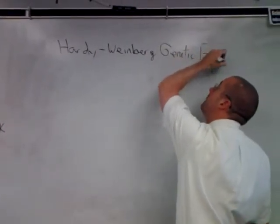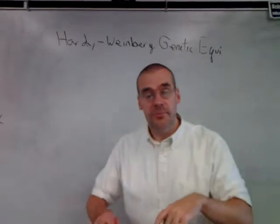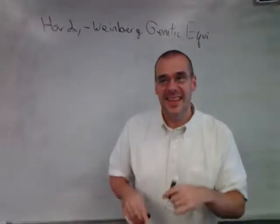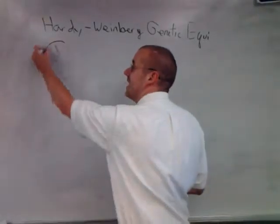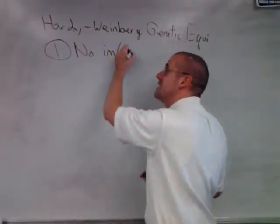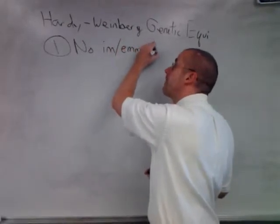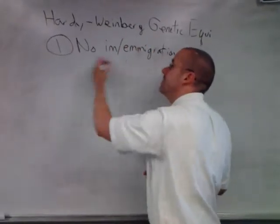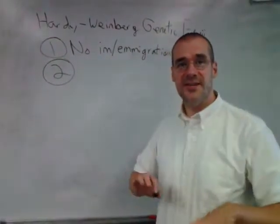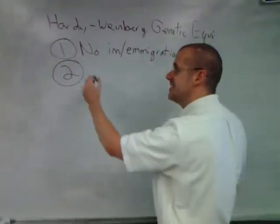They assume certain factors are true. They assume that, number one, there is no movement in or out of the population. They call it immigration and emigration. Two, they assume there is no mutation, so their DNA doesn't change, their alleles don't change.